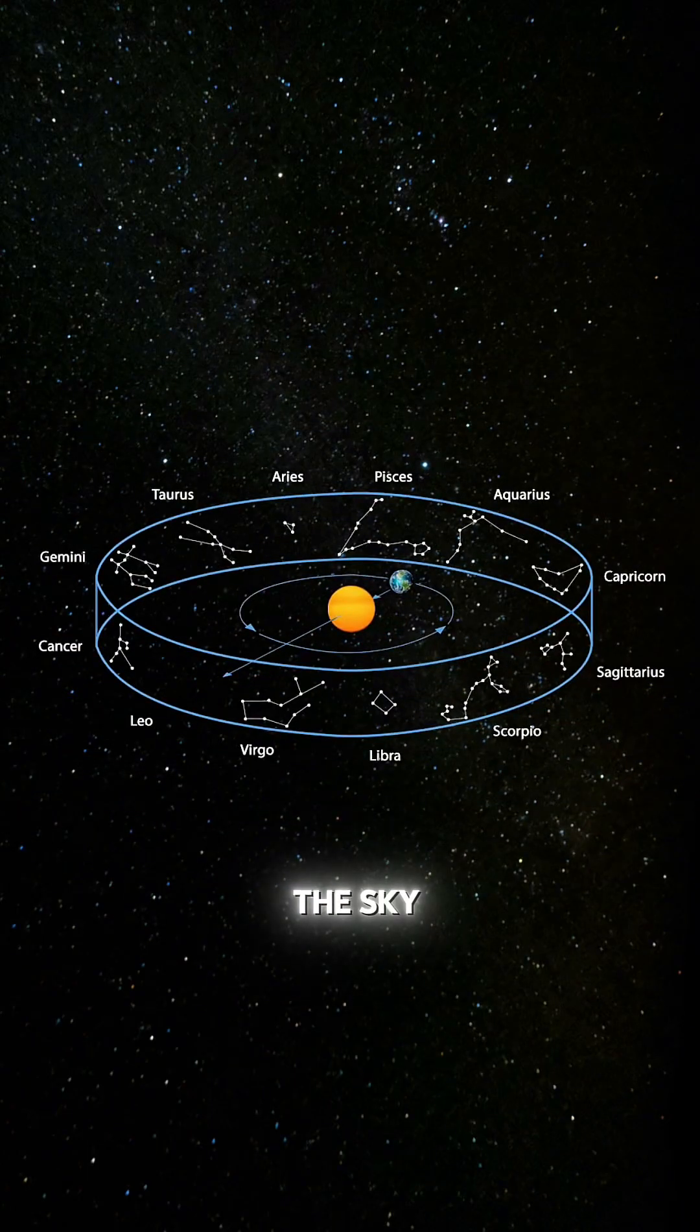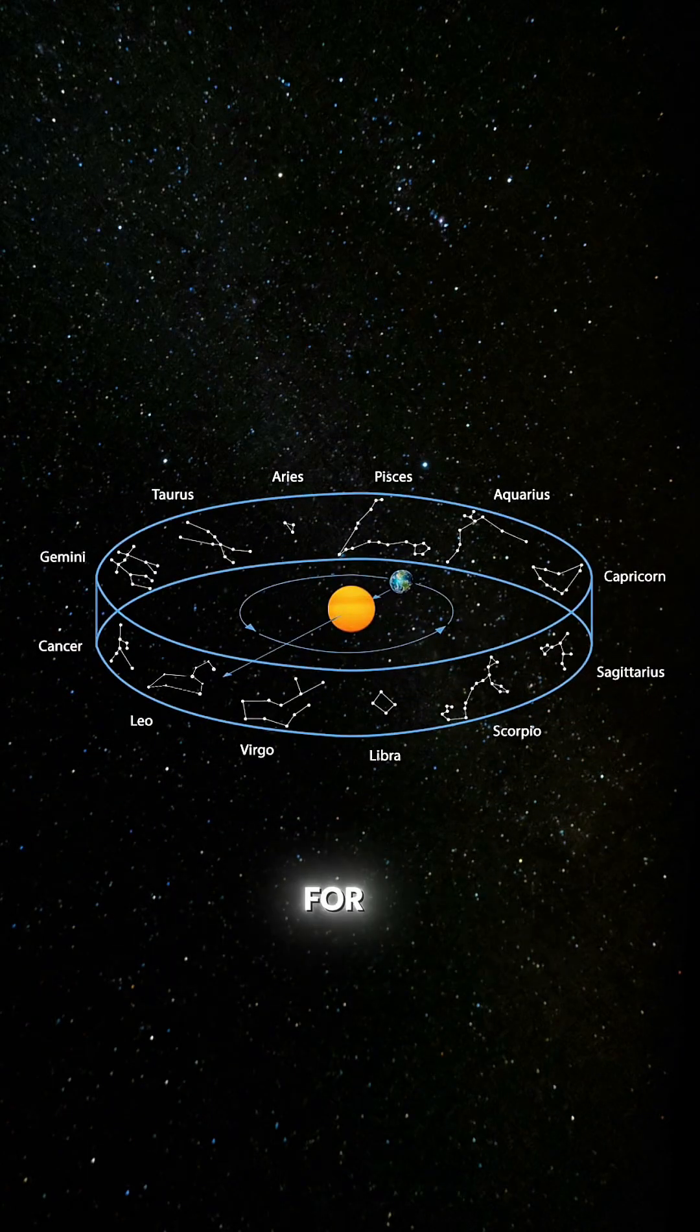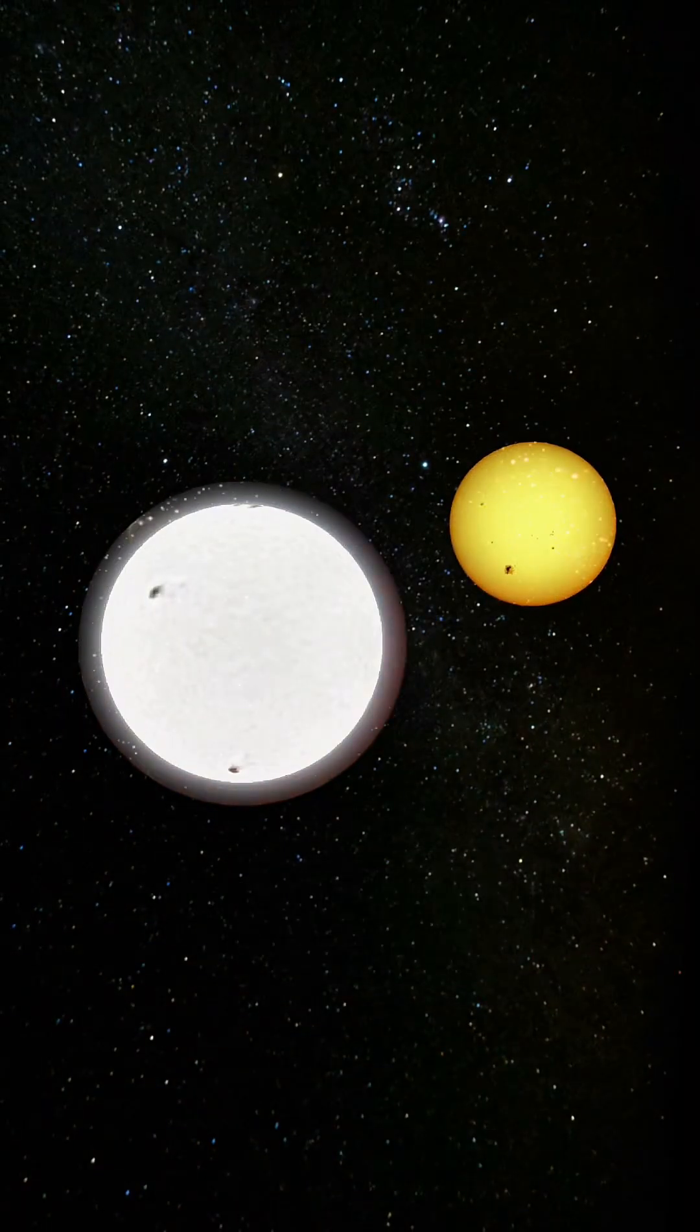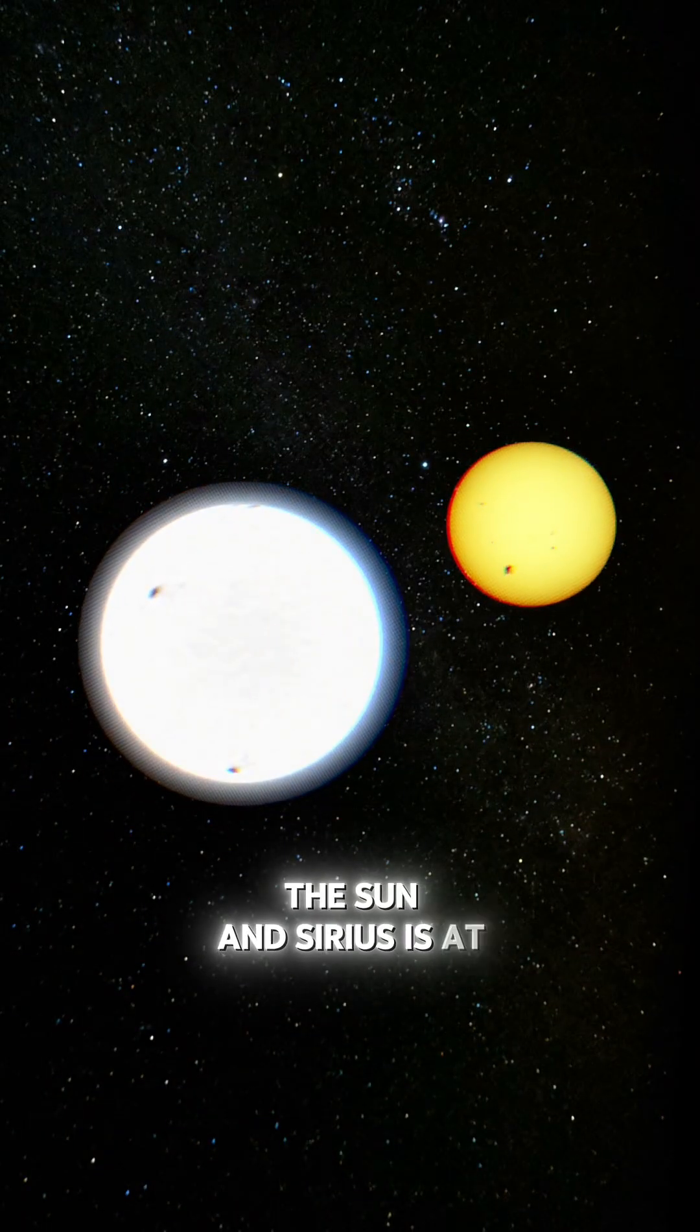The Sun we see in the sky rules during the age of Leo, for in that age the interaction between the two stars, the Sun and Sirius, is at its strongest.